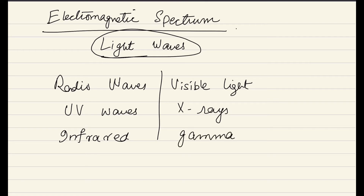So these are all the light waves — you can call them rays or waves, it's the same thing. So these are all the light waves. The common thing in all of them is their speed. They all travel with the same speed, that is equal to the speed of light.